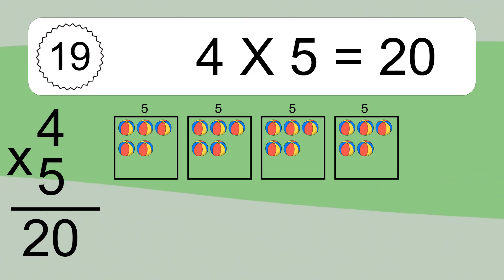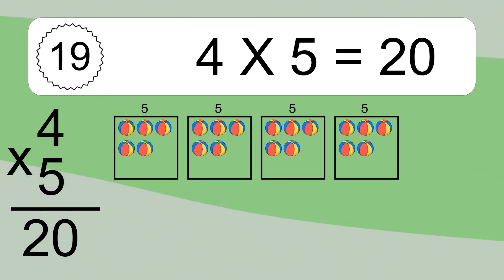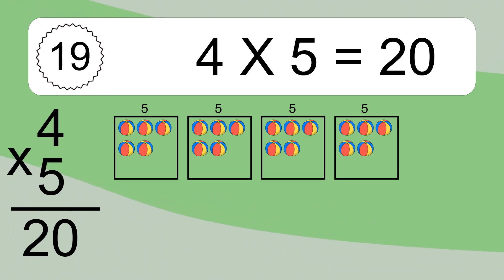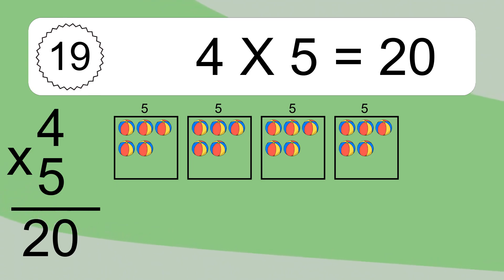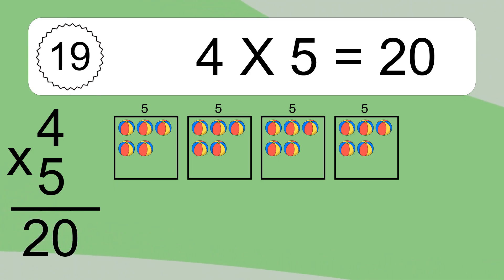4 times 5 equals what? We have 4 boxes, and each box has 5 colorful balls inside. If you count all the balls in all the boxes together, you will have 4 times 5 balls. This equals 20 balls.